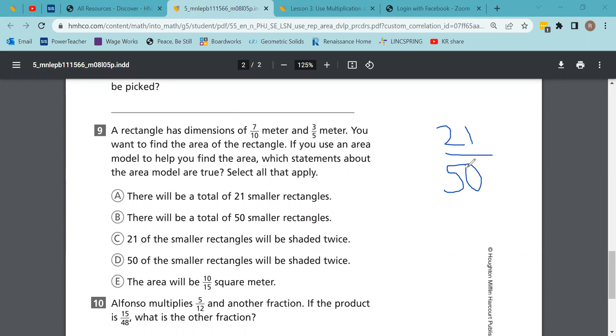There will be a total of 21 small rectangles - so the denominator shows your total, the numerator shows how many out of that total that you're setting aside. There will be a total of 50 smaller rectangles - so one of these is true, one of these is false. I just kind of gave it away: the denominator is the total.